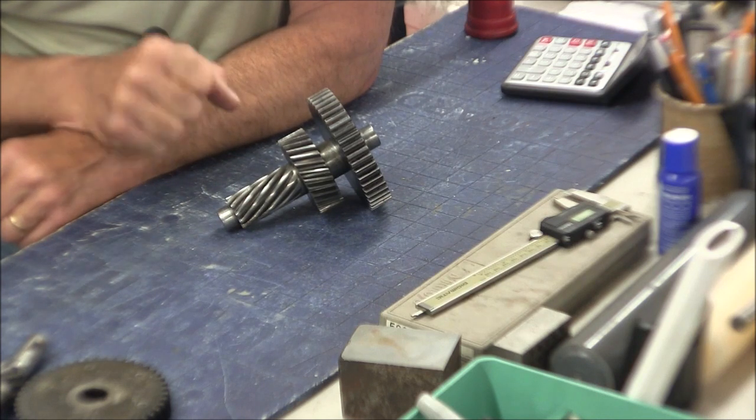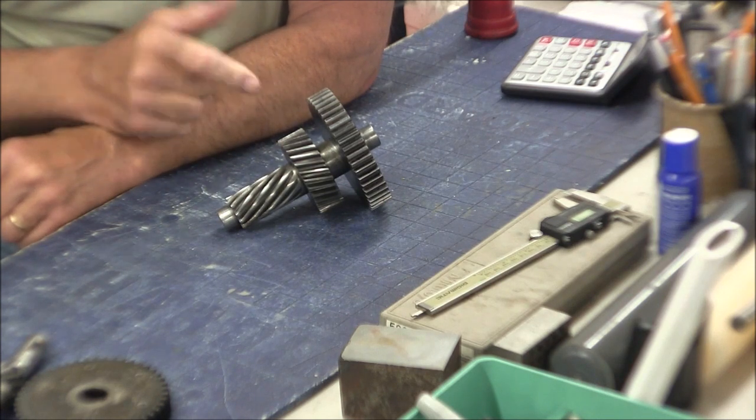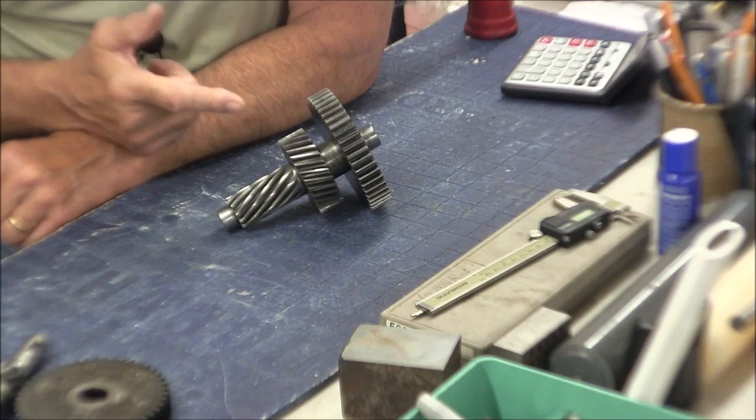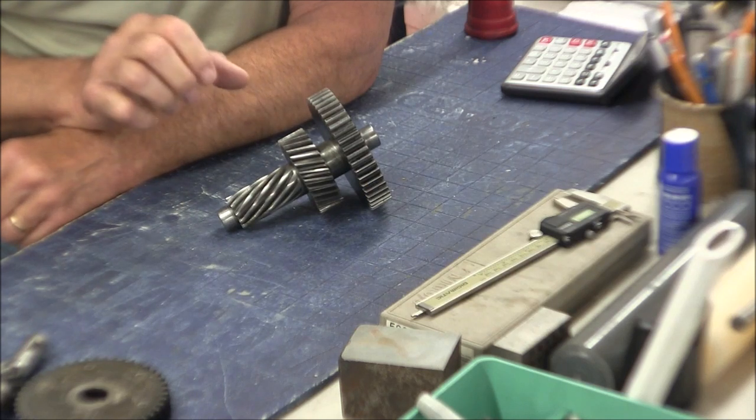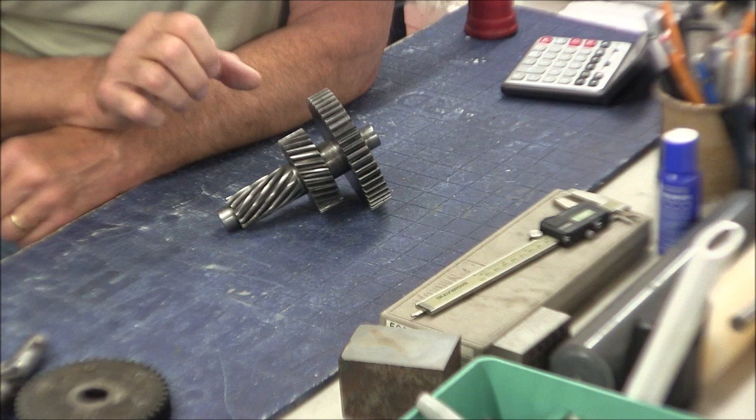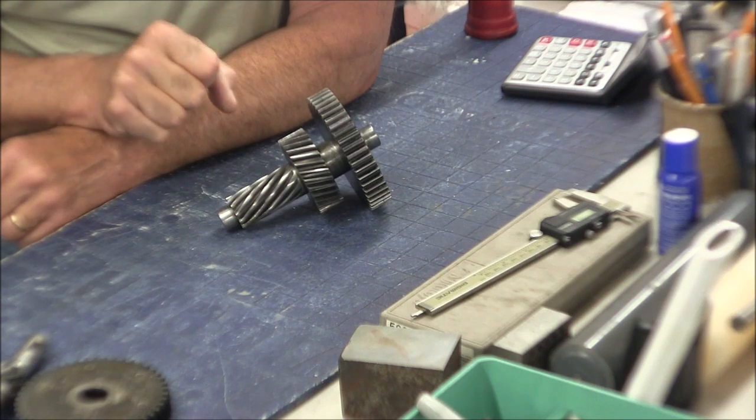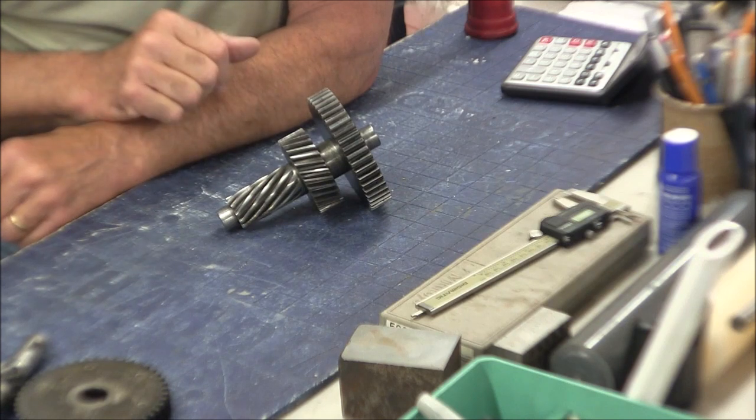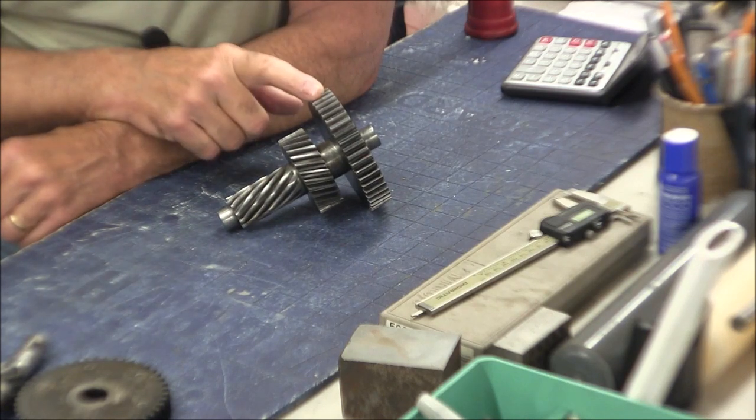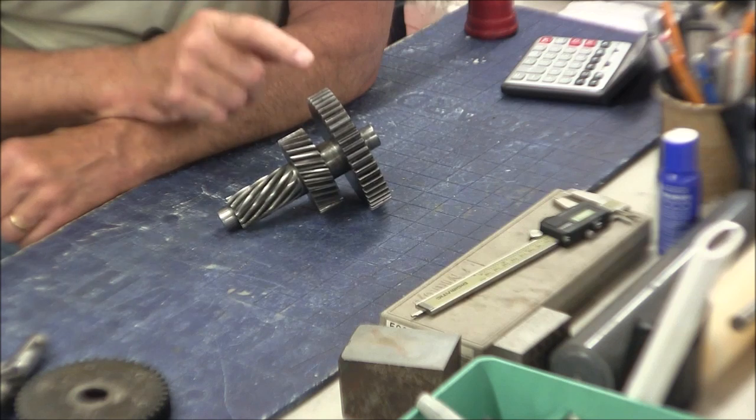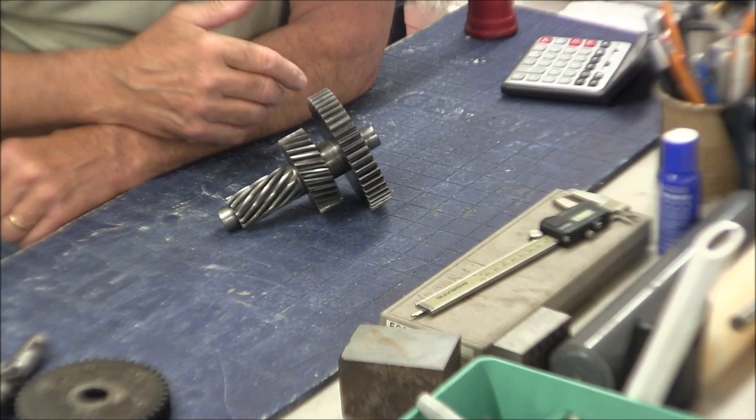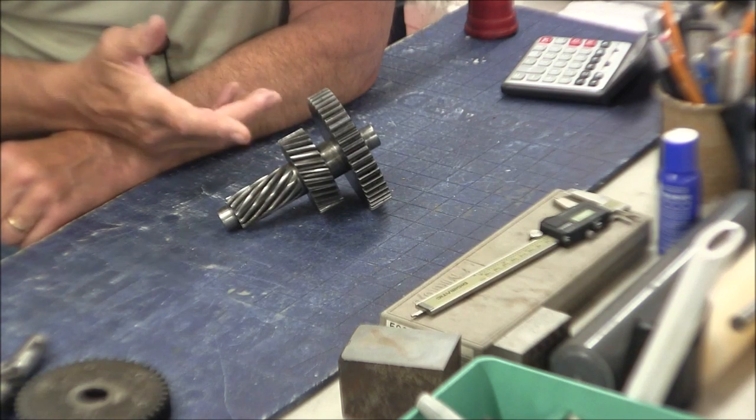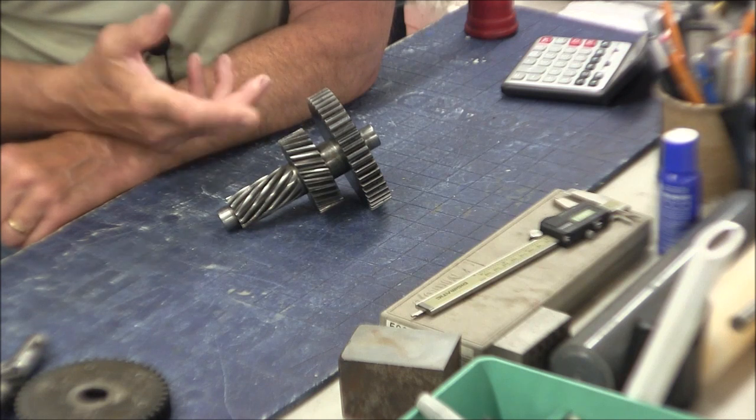When I went to turn the shafts when the transmission was assembled, it seemed like while it didn't exactly drag, it just didn't roll smoothly like gears should. Well, I ran it like that for about a year, and I thought maybe it will wear in a little bit and kind of come out of it. Well, it never did, and it's kind of bugged me ever since.